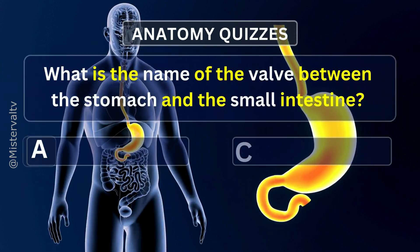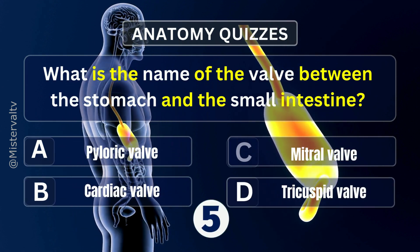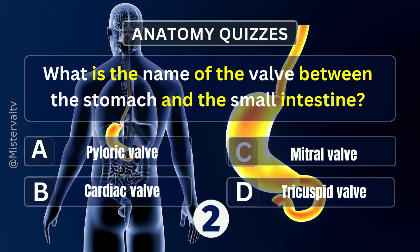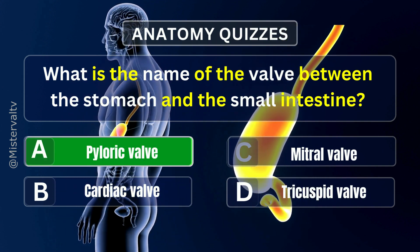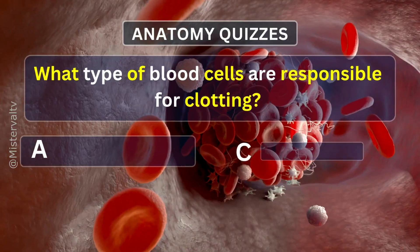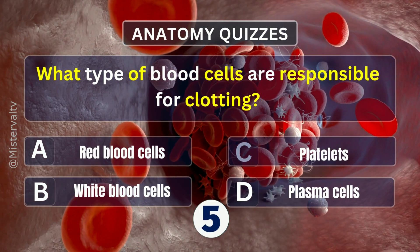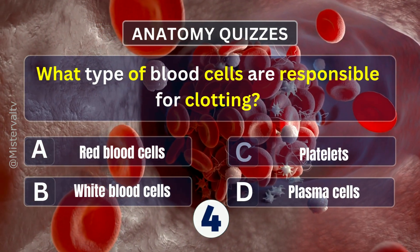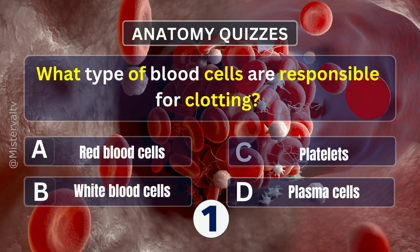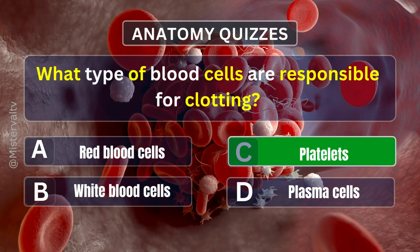What is the name of the valve between the stomach and the small intestine? Answer. A. Pyloric valve. What type of blood cells are responsible for clotting? Answer. C. Platelets.